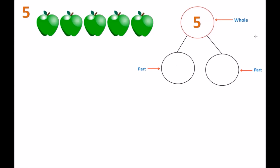Hello everyone, welcome! It's Miss Judy and today we're going to take a look at creating number bonds for the number five. We have five apples that we're going to be looking at. As you remember from our previous number bond classes, you can always start with zero. So we have zero and the number five — our first number bond has zero on the left side and five on the right side. Our whole, which is five, can be created using the parts zero and five.